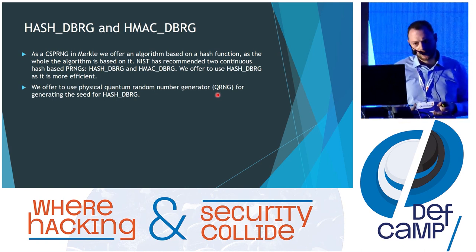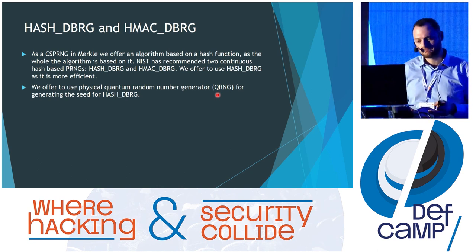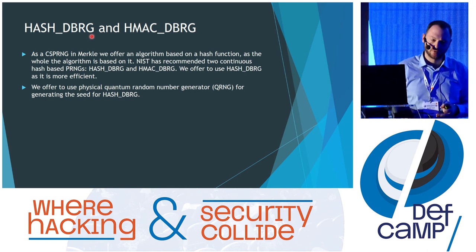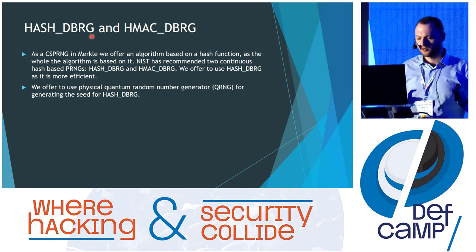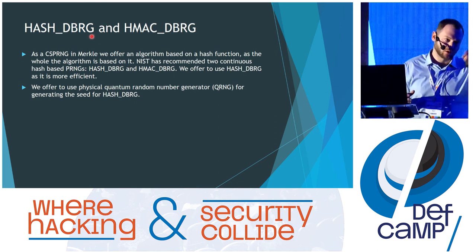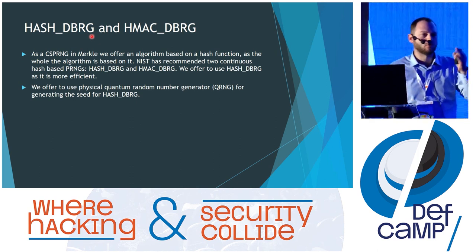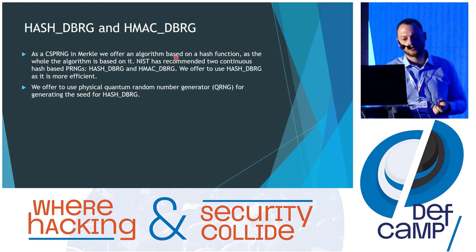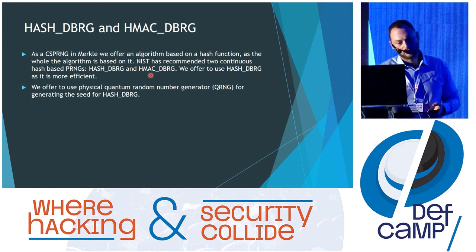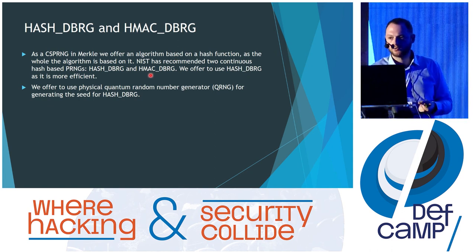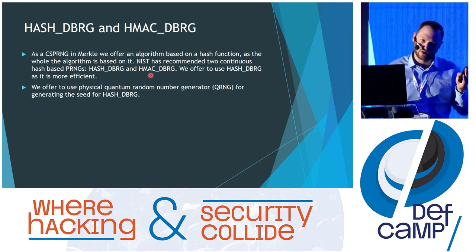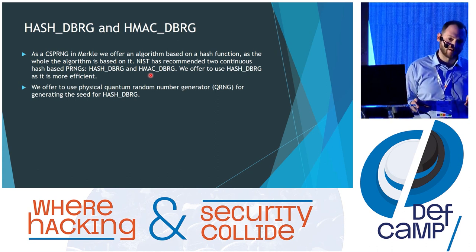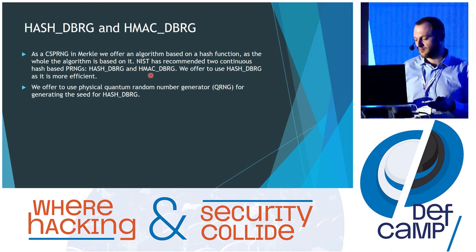We propose to use PRNGs that are based on hash functions. These PRNGs are HMAC-DRBG and Hash-DRBG — they are new standards, absolutely secure, and use a hash function. This is very convenient for us because in our Merkle tree we already use a hash function. We made a comparison and Hash-DRBG is much more efficient. As we know, it must receive a really random seed, and we decided to integrate the seed obtained from a quantum random number generator.